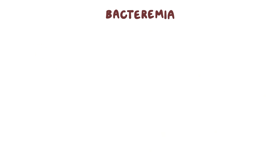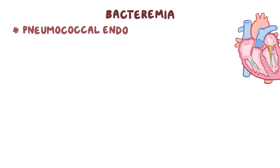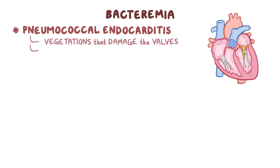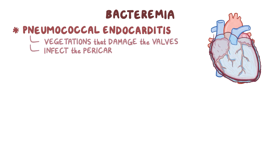Once in the bloodstream, strep pneumoniae can also cause pneumococcal endocarditis, forming clumps called vegetations that damage the valves. It can also infect the pericardium, resulting in purulent pericarditis, which is where pus collects in the pericardial sac.